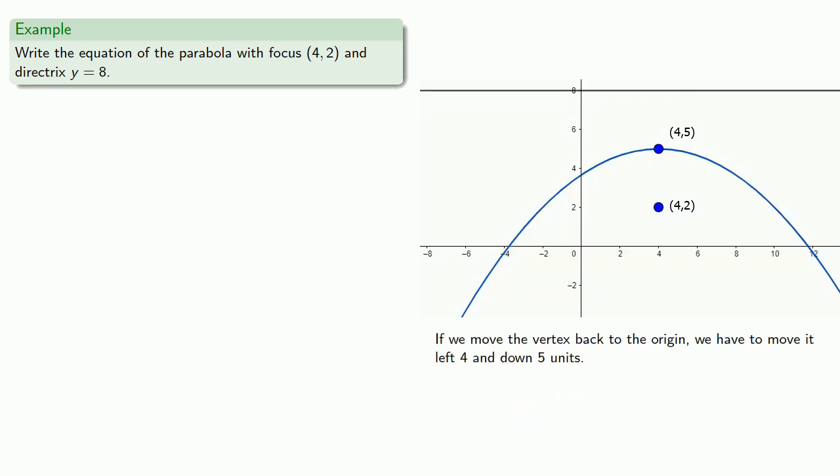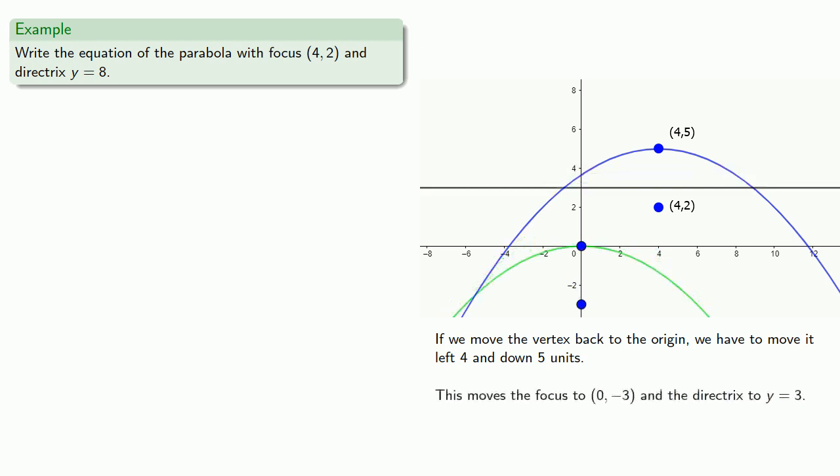Now if we move the vertex back to the origin, we have to move it left 4 and down 5. And this moves both the focus and the vertex. The focus will move to (0, -3). And the directrix will move to y equals 3. And so that tells us that p is equal to negative 3. And so our equation becomes...